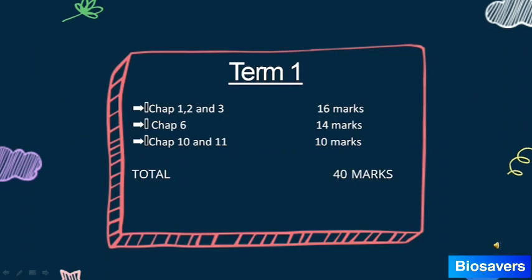In Term 1, the chapters coming from the Chemistry portion are Chapters 1, 2, and 3, carrying 16 marks. From Biology, Chapter 6 will come, and from Environmental Science, Chapters 10 and 11, constituting 14 marks and 10 marks respectively, totaling 40 marks. Term 1 will be fully MCQ with no theory-based questions.